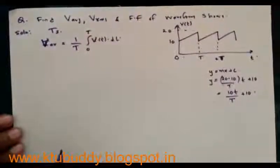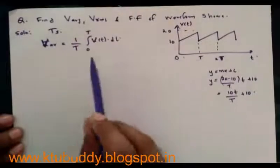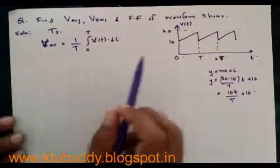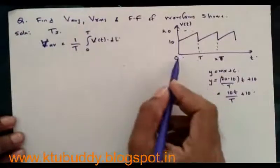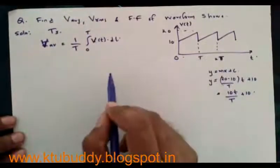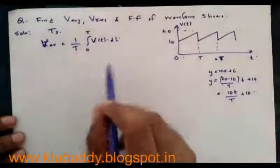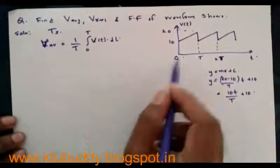Good morning, we are going through an important problem. Given a sawtooth waveform, we have to determine the V_average, V_rms, and form factor of the waveform. Examining the waveform, it is clear that the time period is from zero to T, therefore T seconds is the time period. The lower base of the sawtooth waveform is 10 volts and its upper base is 20 volts.